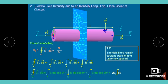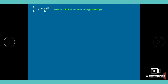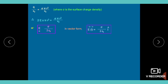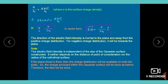Faces A and B contribute 2E∫dS = 2E·πr². The total charge enclosed is σ·πr². By Gauss's theorem, this equals σ·πr²/ε₀. Setting the flux formula equal to the Gauss theorem result: 2E·πr² = σ·πr²/ε₀, giving the final result E = σ/(2ε₀). In vector form, this is the electric field due to a single infinite plane sheet of charge.